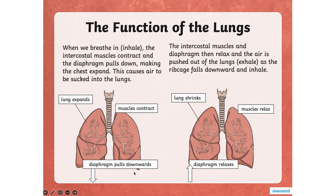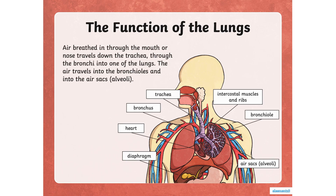This boomerang shape you see in between is where the diaphragm is — it also relaxes. Air breathed in through the mouth or nose travels down the trachea, through the bronchi, into one of the lungs. The air then travels into the bronchioles and into the air sacs, which are called alveoli.